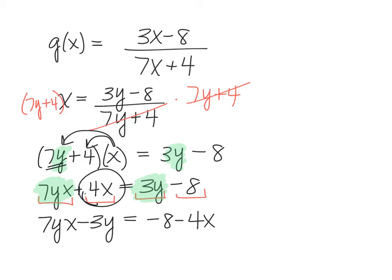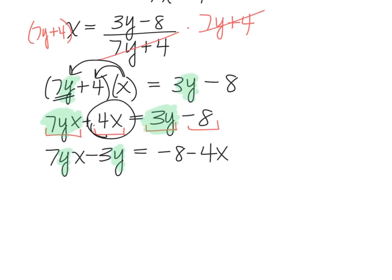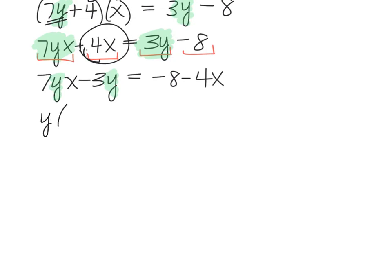And then what that lets me do with the terms on the left side is they both have a y in common. So this is a greatest common factor. We have a GCF, basically, so now we're going to factor out a y.